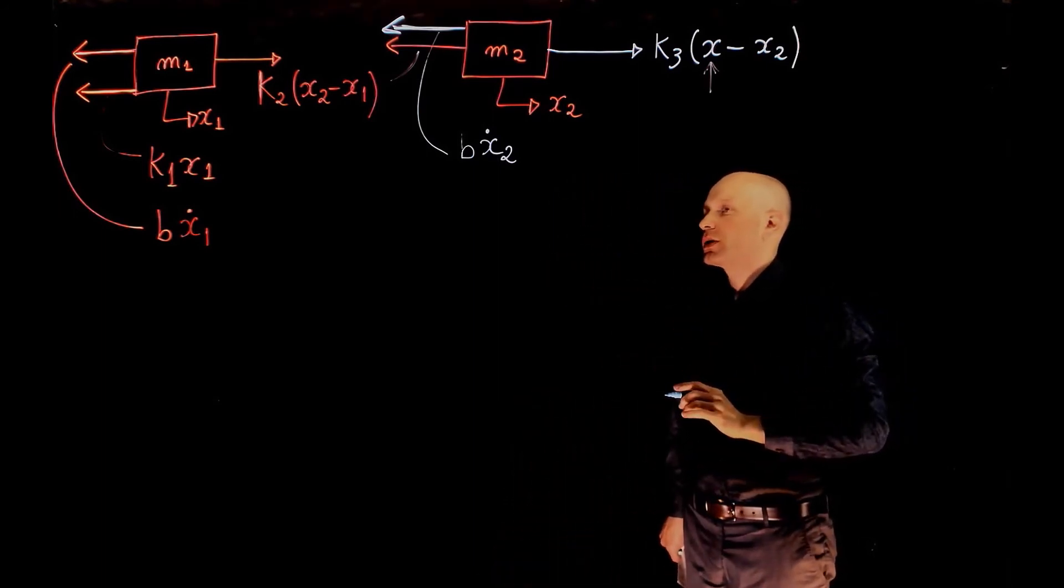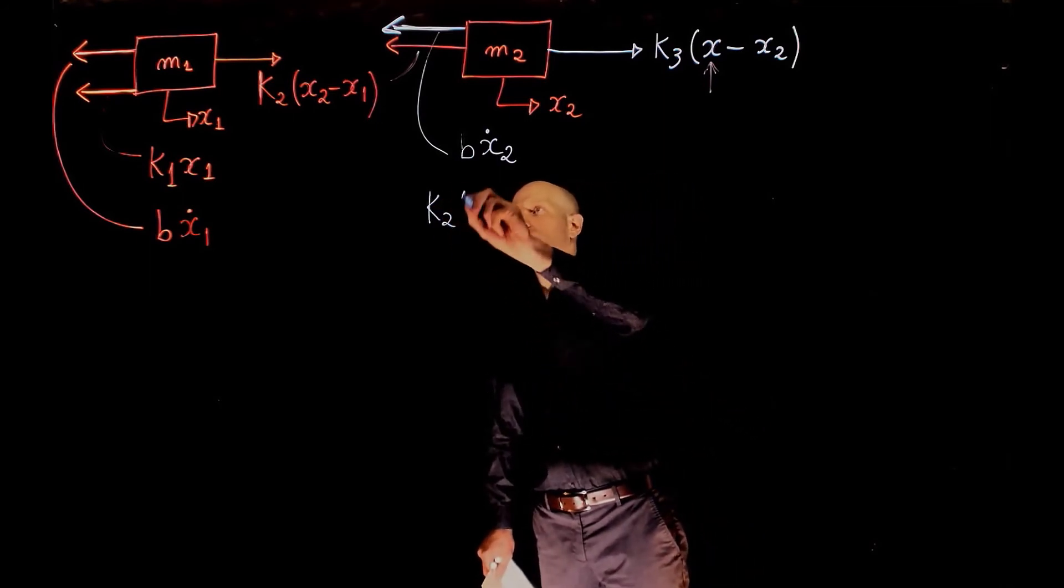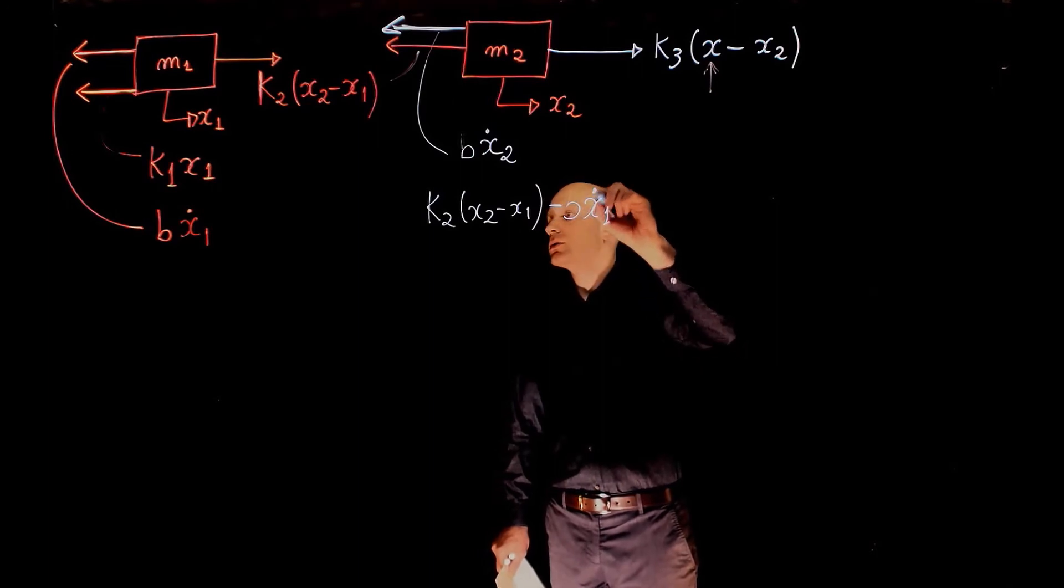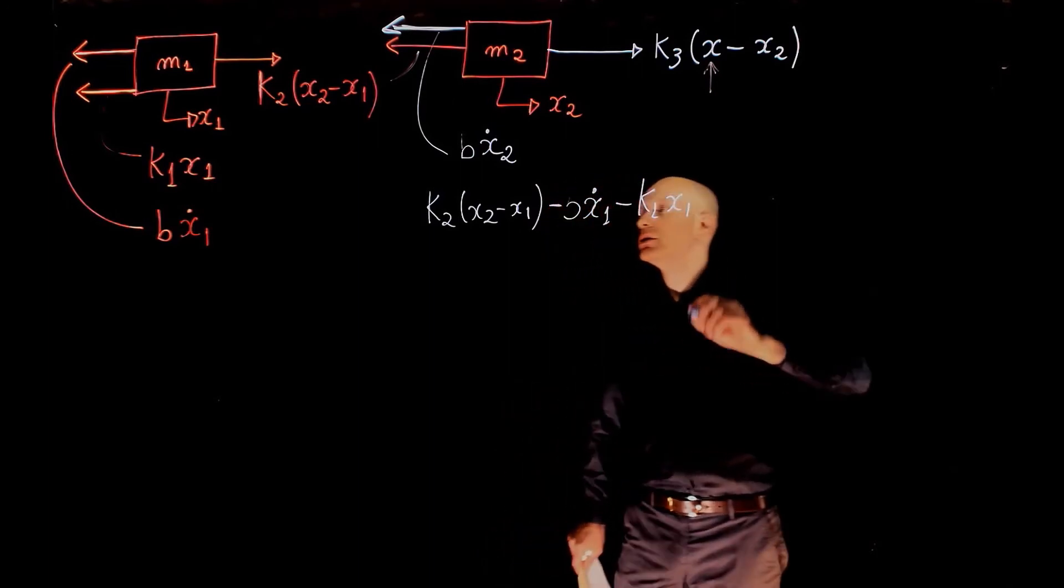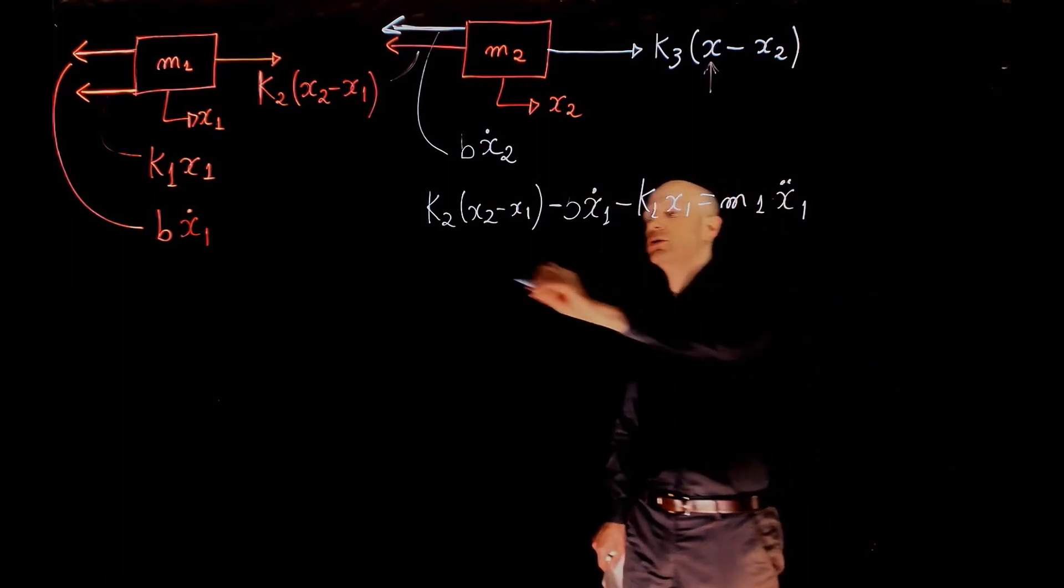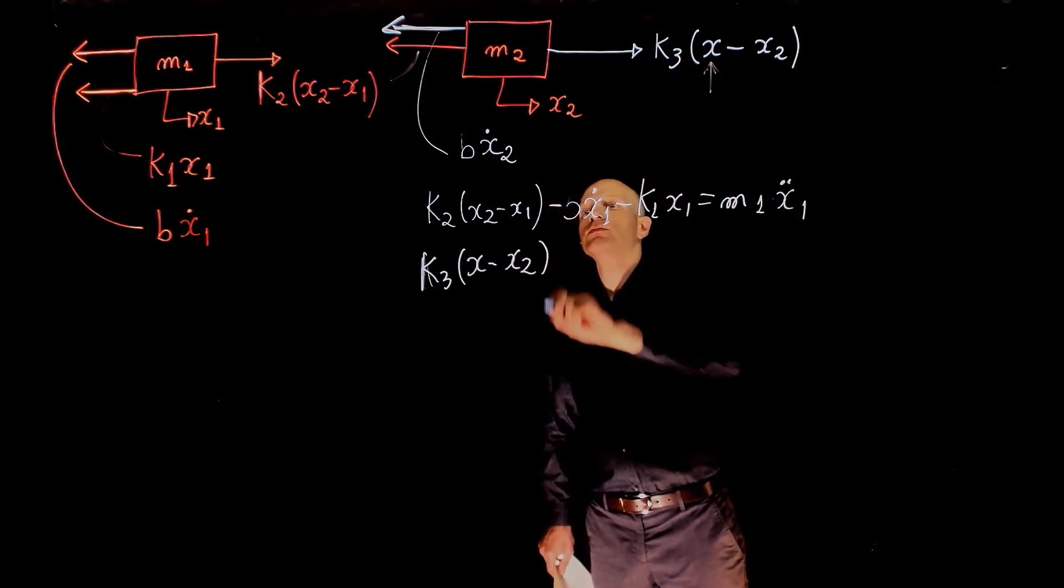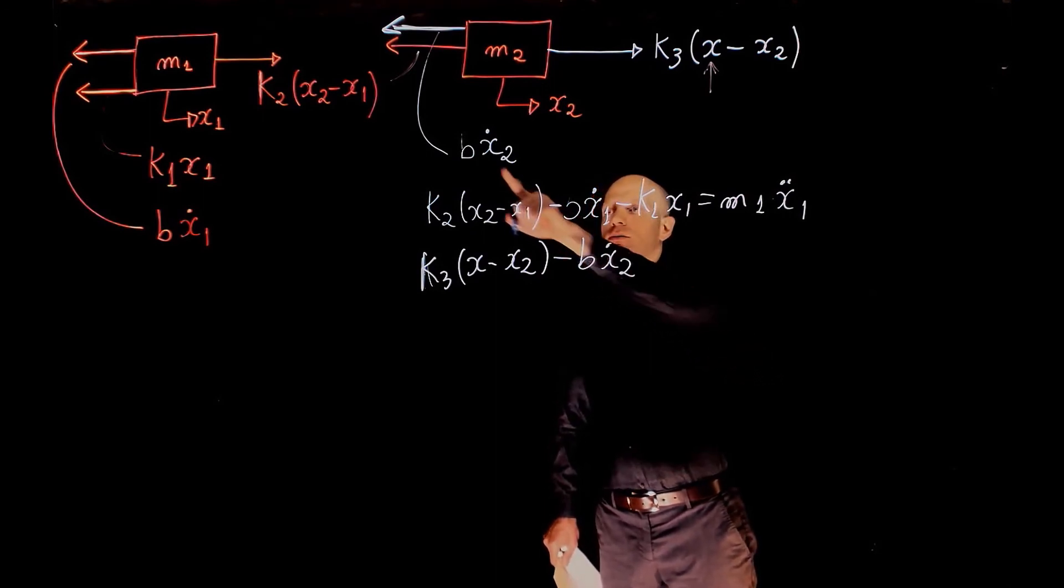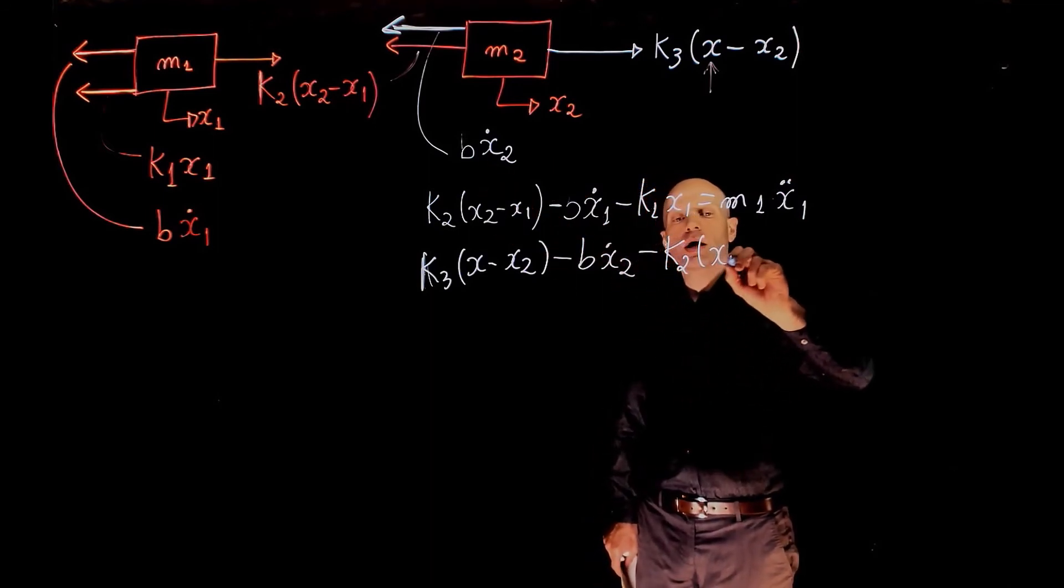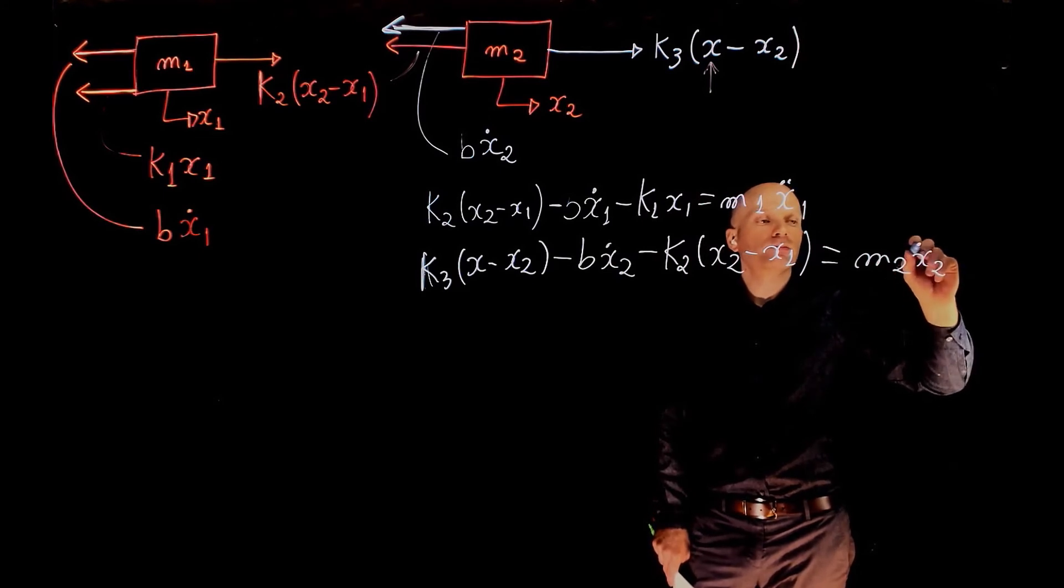Now that we have both free body diagrams, we can go ahead and write the equations. For mass m1, we'll have k2 times x2 minus x1, minus b times x1 dot, minus k1 times x1, equals m1 times x1 double dot. And for mass m2, we have k3 times x minus x2, minus b times x2 dot, coefficient of viscous friction between the mass and the plane, and minus k2 times x2 minus x1. And this equals m2 times x2 double dot.